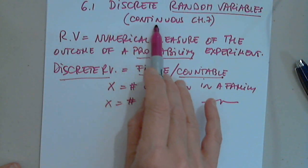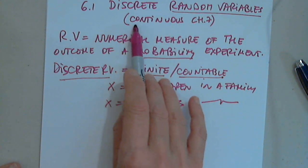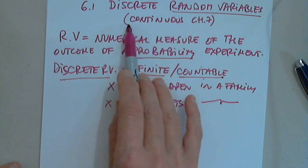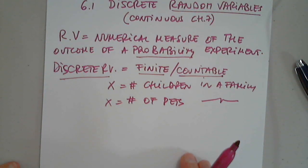A continuous random variable, we know that, is like time, weight, height, those are continuous random variables.